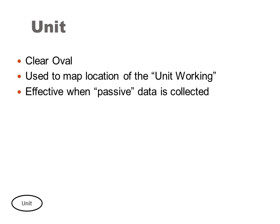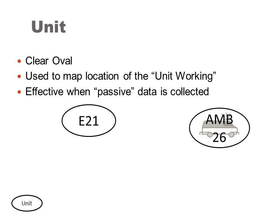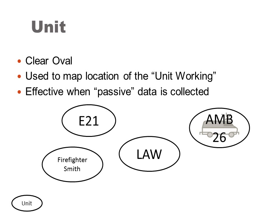Units are represented by a clear oval. This symbology is most effective when data is collected passively through AVL or other location devices. This symbol can be categorized to fit different needs, including at the personnel level.